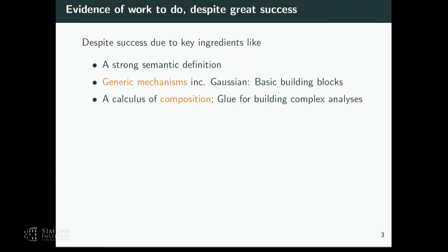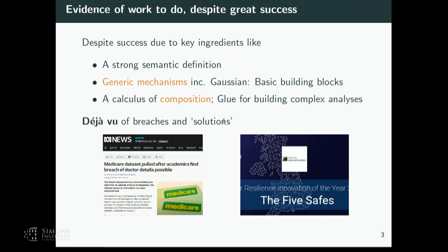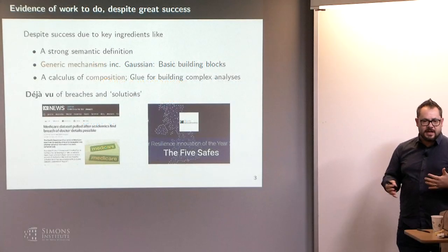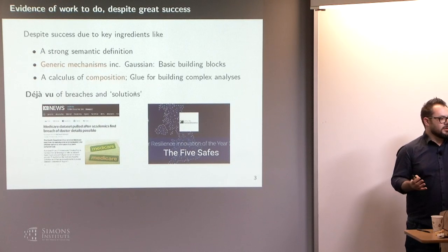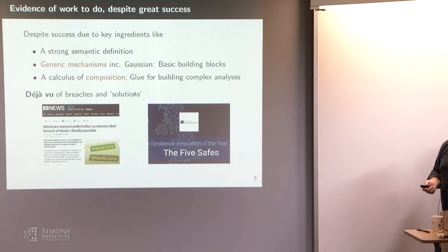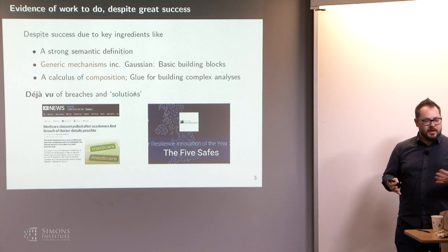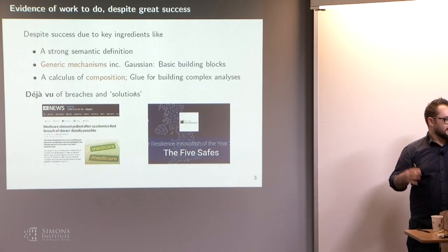We're here talking about lots of privacy-protecting technologies and the theory of these things, largely differential privacy. Differential privacy has had lots of successes, and there are key ingredients for these successes. But we keep seeing these kinds of privacy failures — they don't diminish over time even though we have great tools. We get respectable organizations like the UK Office for National Statistics, the equivalent of the US Census Bureau, and the Australian Bureau of Statistics, still solving privacy with things like the five safes framework — with extensions to six and seven safes.